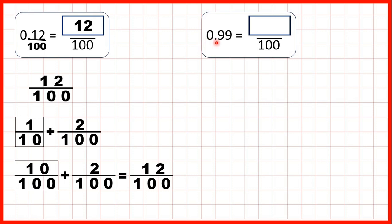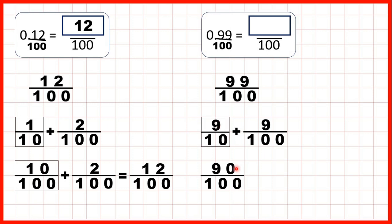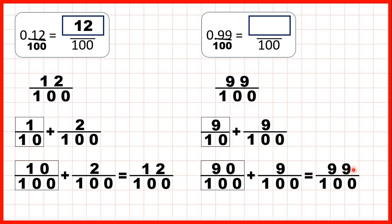Now we have 0.99. That's 99 hundredths because, again, we have a number with two decimal places, and we know that the second digit after the decimal point tells us how many hundredths we have. So we can draw a line across from our decimal point and write a denominator of 100. This 9 stands for 9 tenths, because it's the first digit after the decimal point, and this 9 stands for 9 hundredths. That gives us 99 hundredths, because 9 tenths is the same as 90 hundredths — 10 times 10 is 100 and 9 times 10 is 90. So when we add the 9 hundredths to the 90 hundredths, we get 99 hundredths.